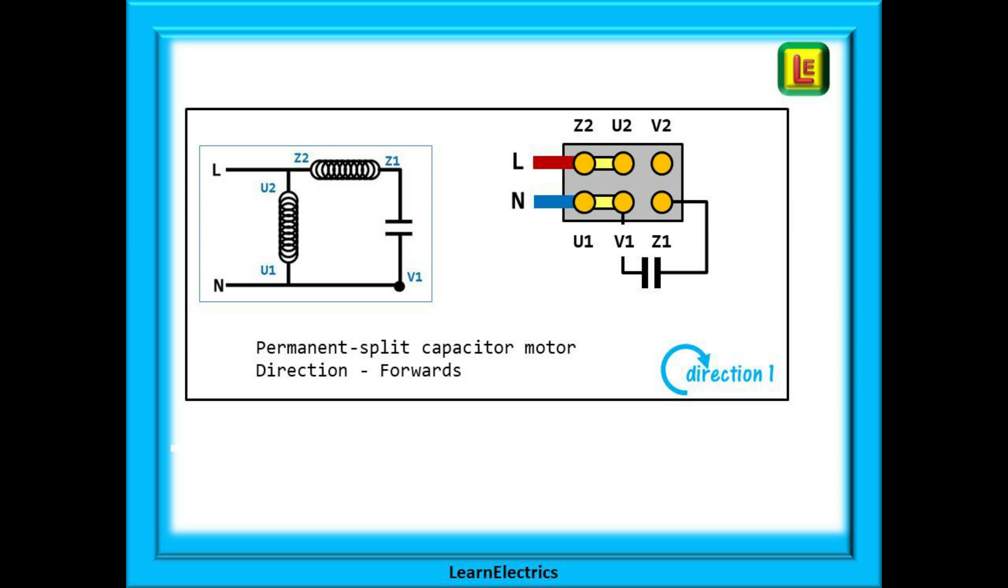Let's look now at how these changes are made on the motor terminal block. Here we have a permanent split capacitor motor. Notice that one link is connecting Z2 and U2 and the other link is connecting U1 and V1. The capacitor connects between V1 and Z1. The live or phase cable connects to Z2 and the neutral to U1.